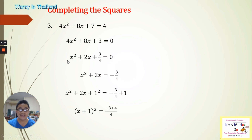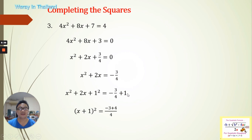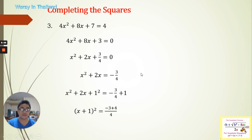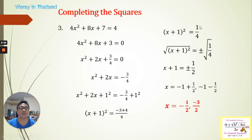You will see here that our leading coefficient is now only 1. We can transpose the constant 3/4 to the right side — it becomes negative 3/4. For the x term, we have 2, so we divide that by 2: 2 divided by 2 is 1. So we add here 1² and on the right side also 1². This is now a perfect square — completing the square is complete. So we can write (x + 1)². On the right side: 4 times 1 is 4, plus negative 3, which equals 1 over 4.